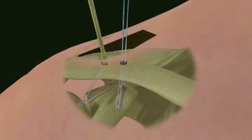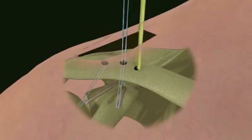Drill two 4.5 mm holes in the clavicle. Size the holes for the ends of the graft.